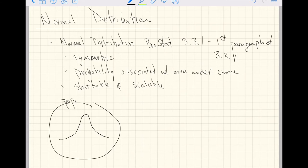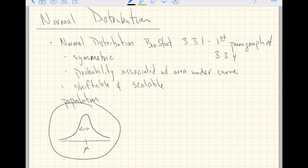The normal distribution, like other distributions on the population side, has a measure of center along the x-axis. The peak — the mode of this distribution — is centered at the population mean mu. The width at the shoulders of the distribution is the population standard deviation sigma. That is the Greek letter sigma; it is not a 6, although it kind of looks like one.